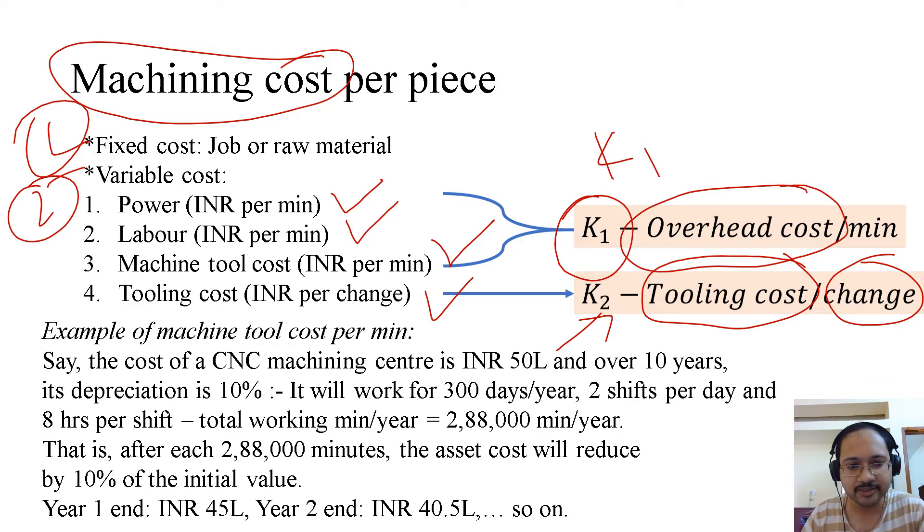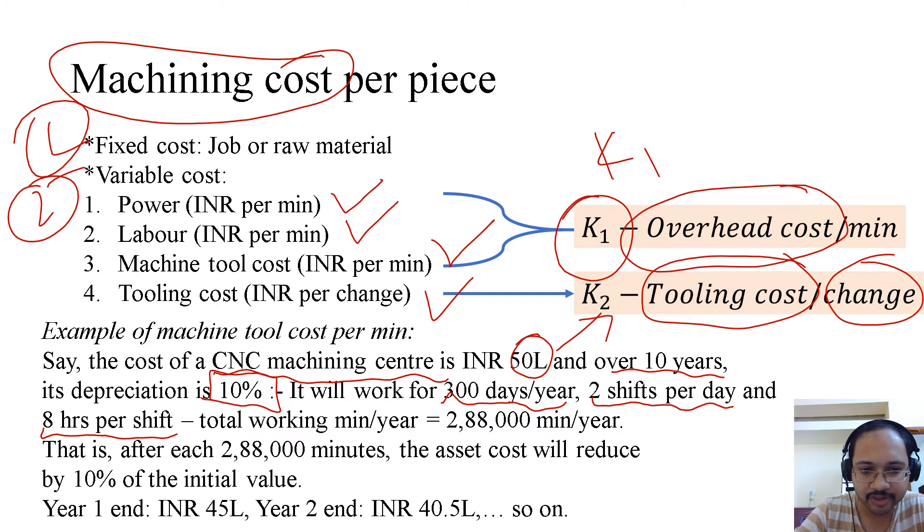Now we just mentioned about machine tool cost. So what is the example of a machine tool cost per minute? Say the cost of a CNC machining center is 50 lakh rupees, and over 10 years of time, it has a depreciation of 10%. So let's say it works for 300 days a year, two shifts per day and eight hours per shift.